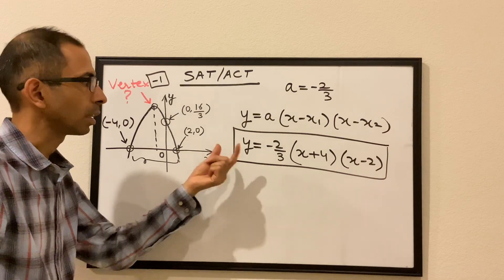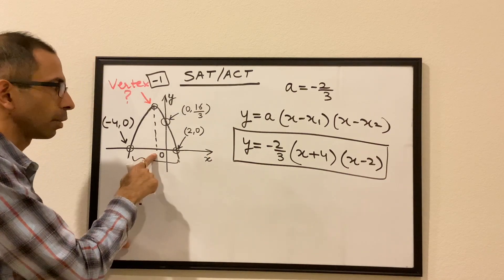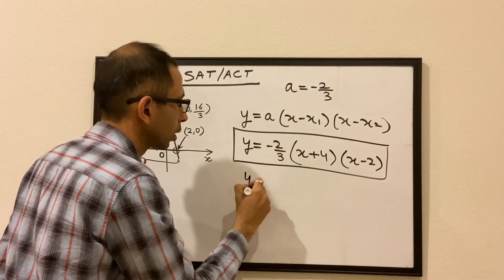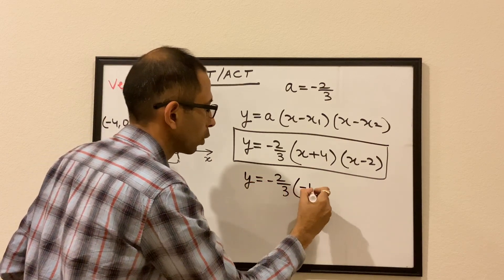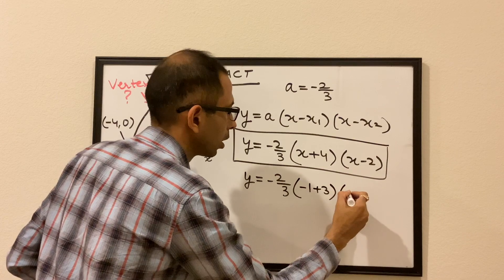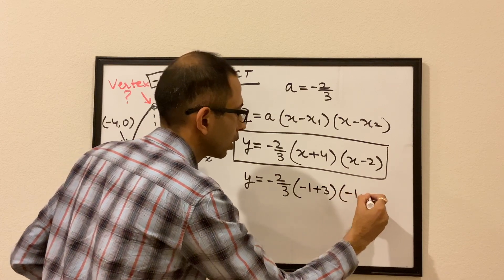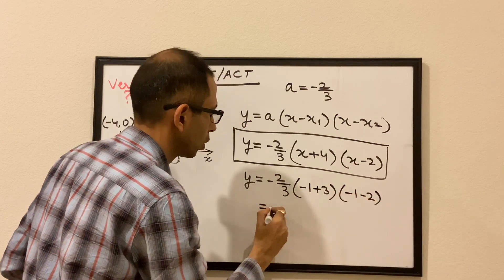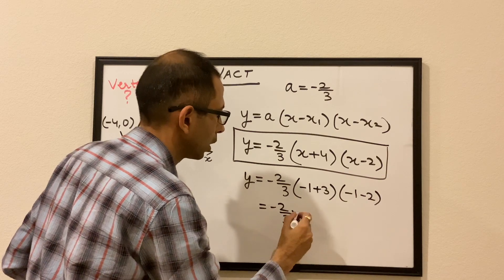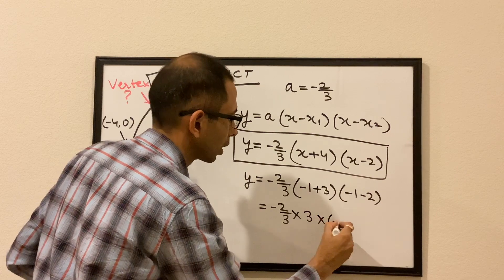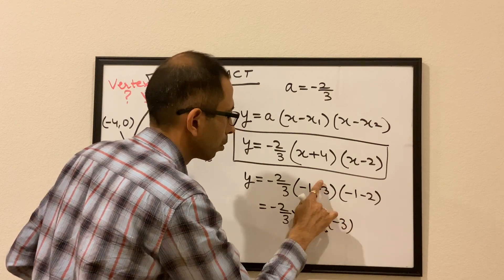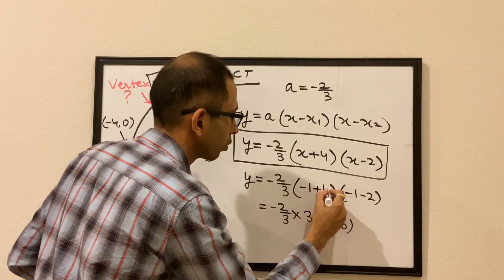We can find the y value for any given x. In our case, we are interested in finding the y value when x is -1. So we'll put x as -1 here. So -1 plus 4 is 3, and -1 minus 2 is -3, -2/3 times 3 times -3.